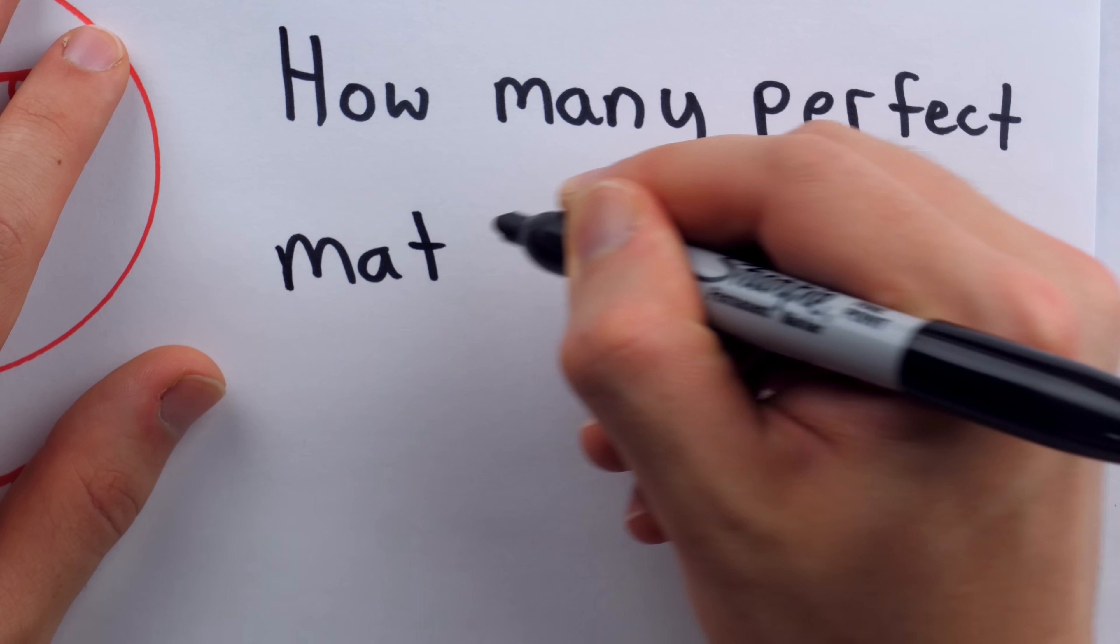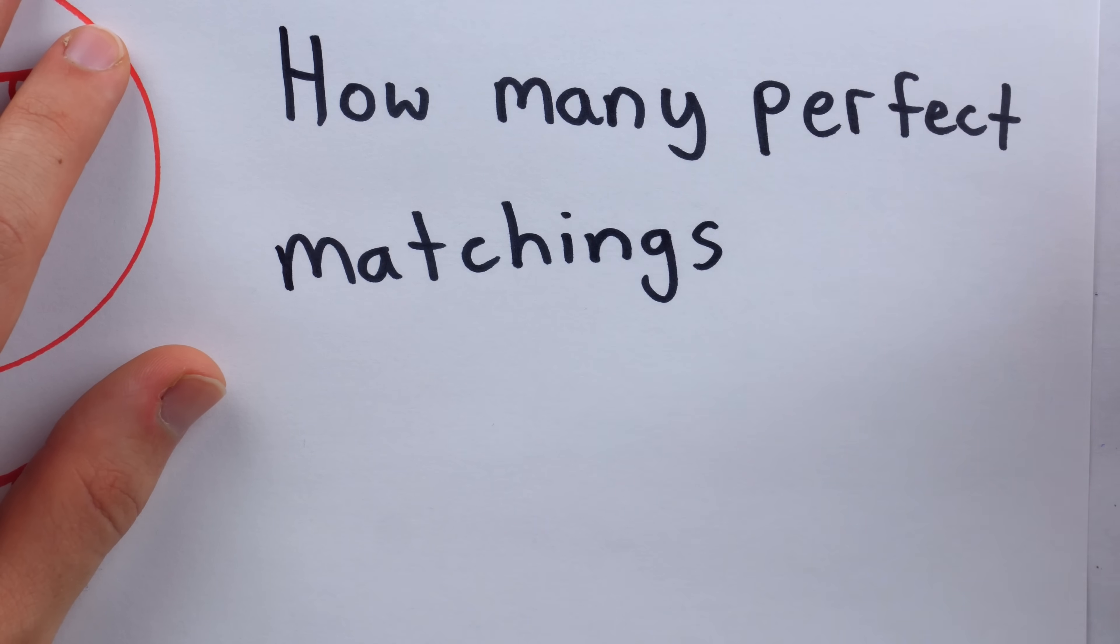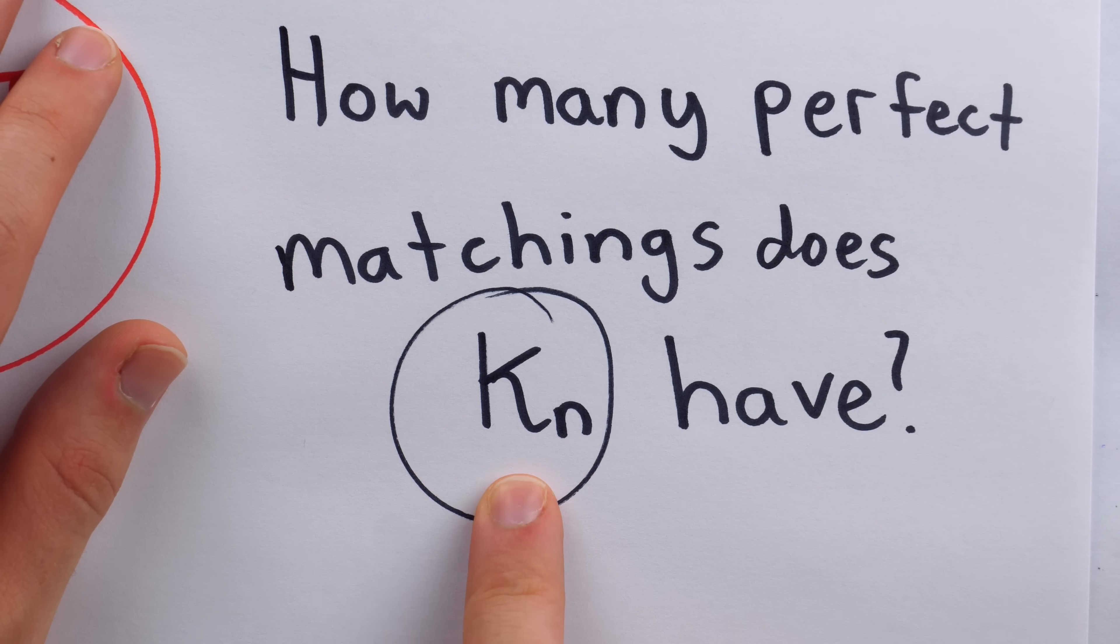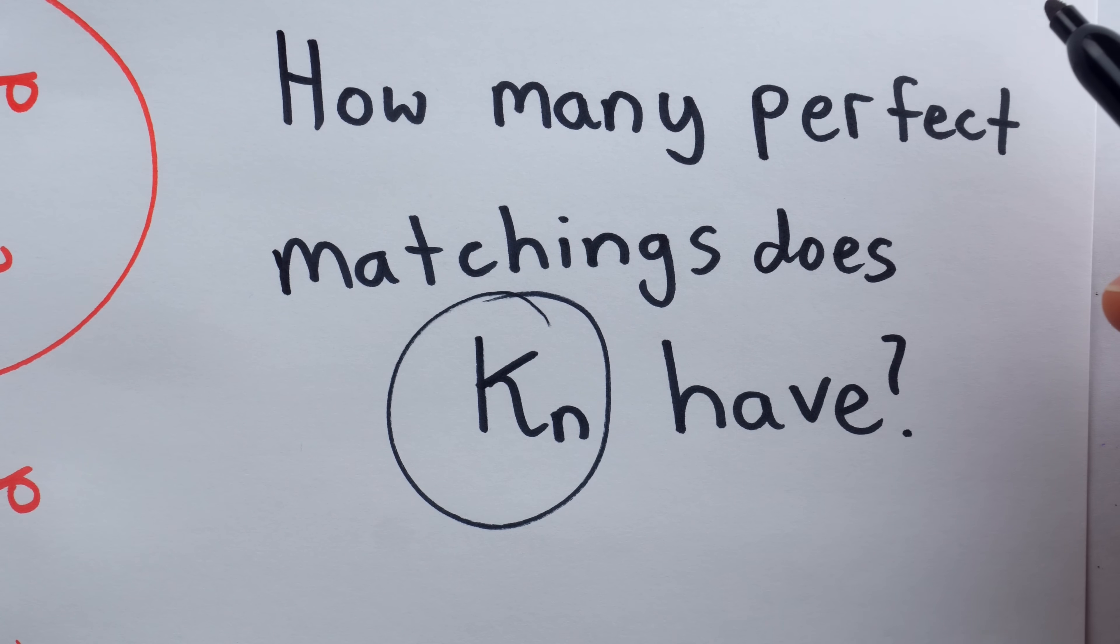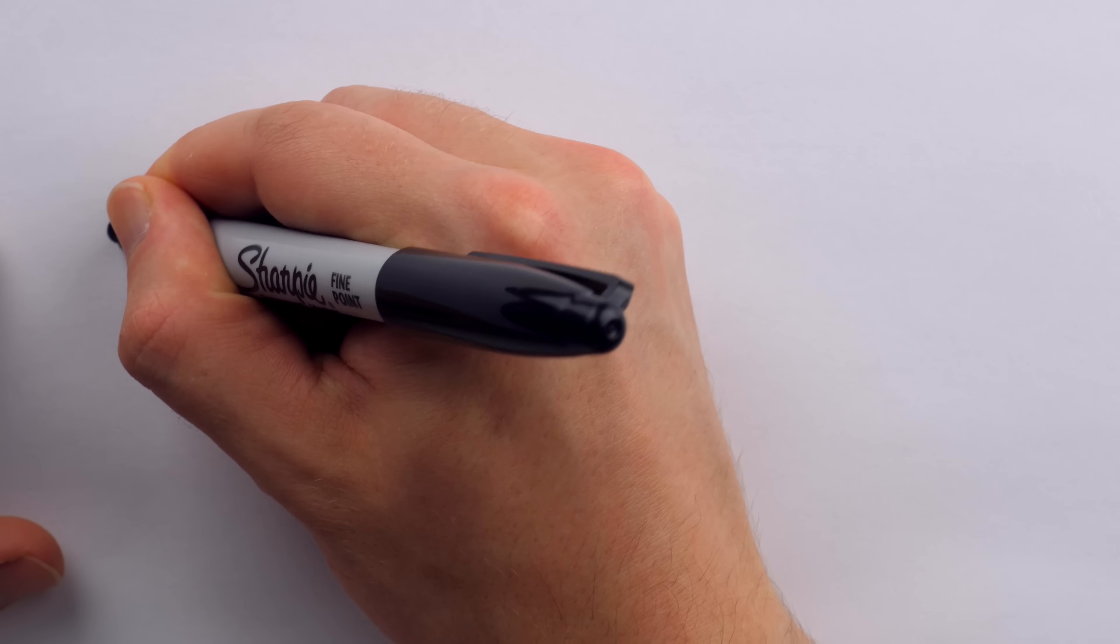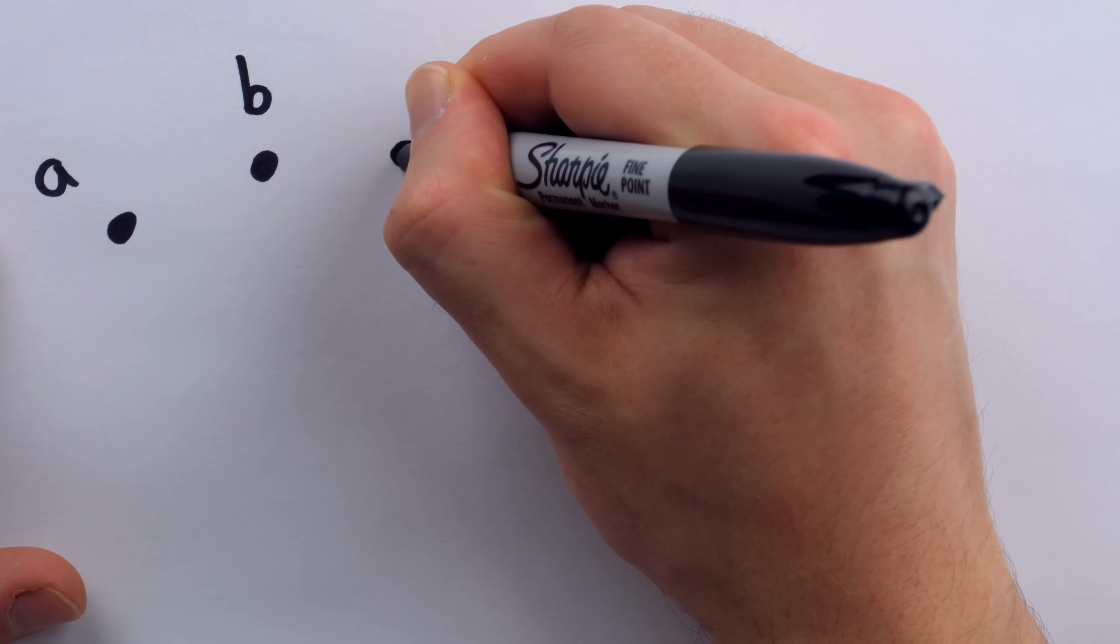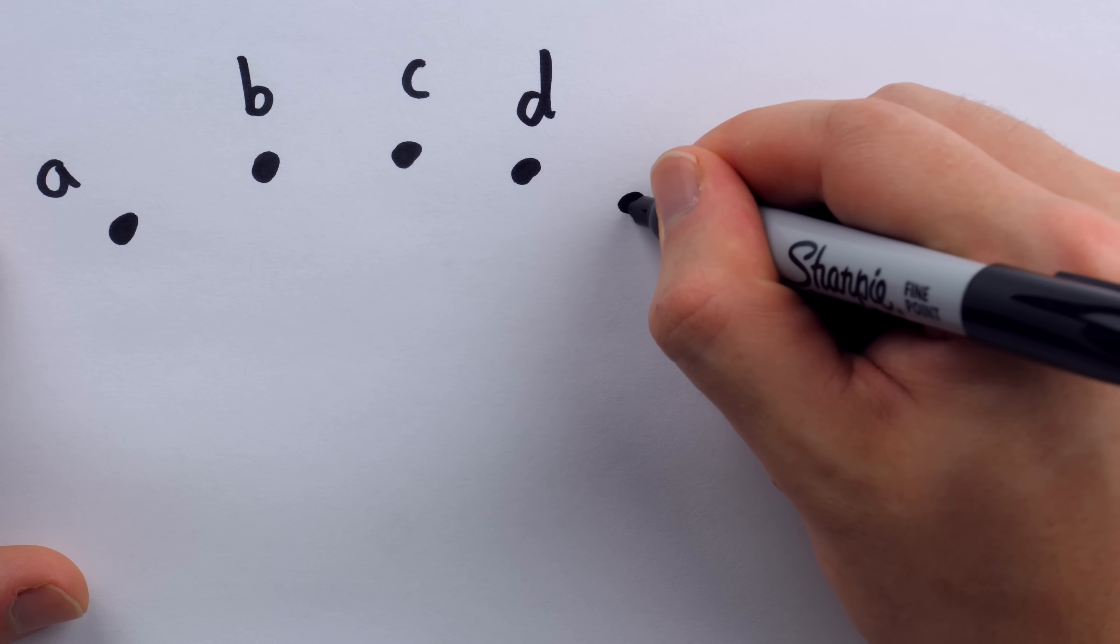We saw that in the case of four vertices, there were three different perfect matchings. But what about larger, even values of N? This, by the way, is the notation for a complete graph on N vertices. It's a K with a subscript of N. So that's our question. How many perfect matchings does KN have? And we're just considering N being even, because otherwise the answer is zero perfect matchings. Well, let me sketch out a little hypothetical graph here, and you'll see that this question is actually pretty easy to answer. And we'll see our friend the double factorial when we solve this problem.